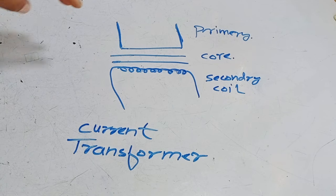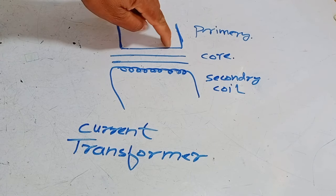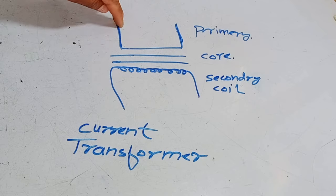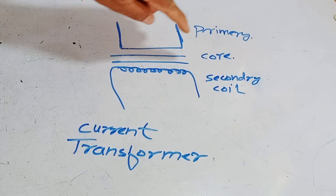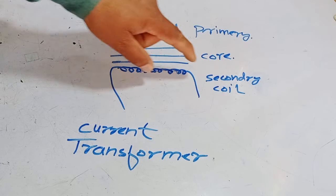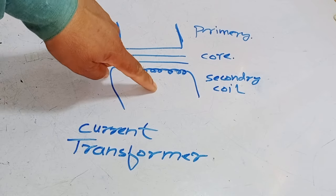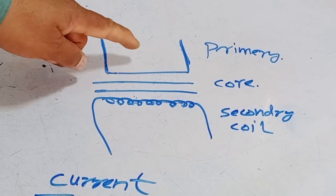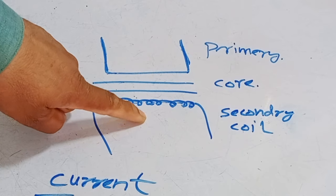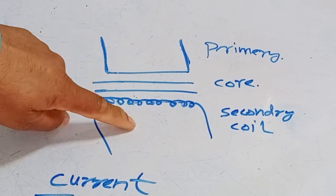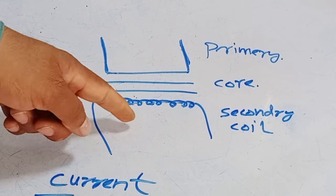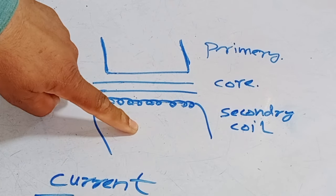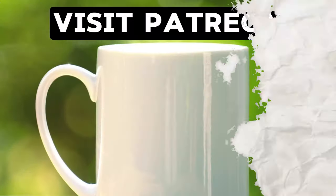If you take a look at the current transformer, its diagram looks something like this. A thick single wire is used on the primary side. A core is in the center, then the secondary coil, also known as the burden coil. Some percentage of the current that is flowing in the primary coil will transfer to the secondary coil. The current that has transferred in this secondary or burden coil will be seen on the feedback of the microcontroller. This will make the microcontroller know how much current flows on the load.